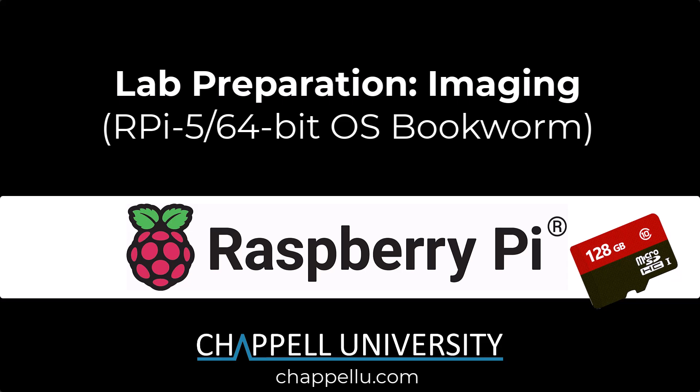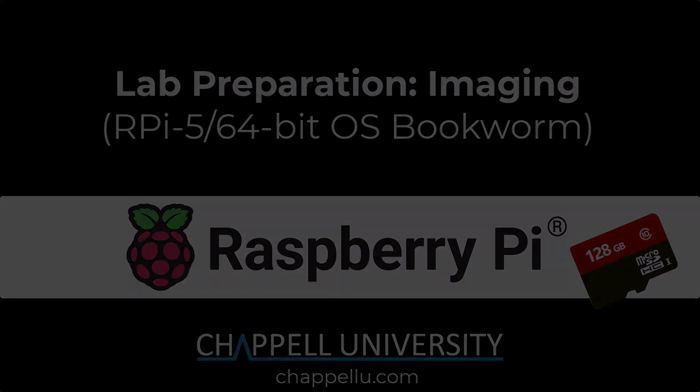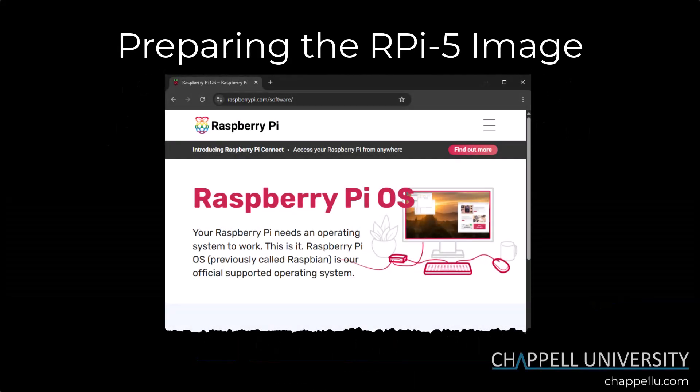Hi, this is Laura Chappell and I'm going to take you through the process of imaging a micro SD card for use on a Raspberry Pi 5 with a 64-bit operating system. The first step is to get the Raspberry Pi OS imager software, and you can download that from raspberrypi.com/software.